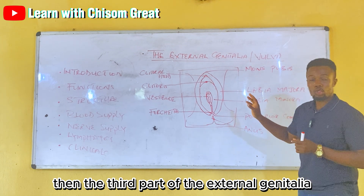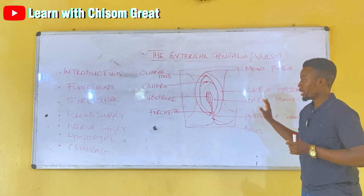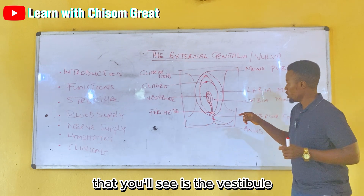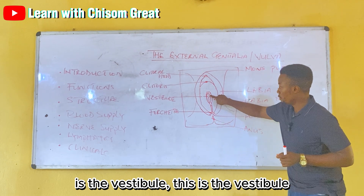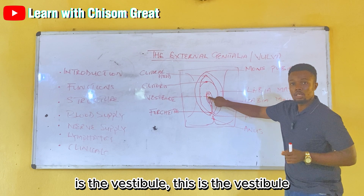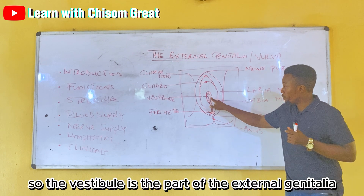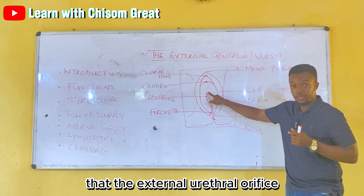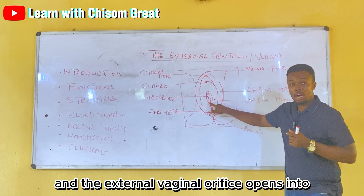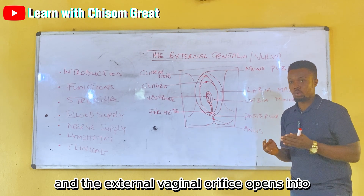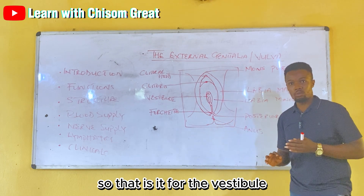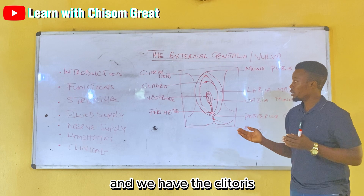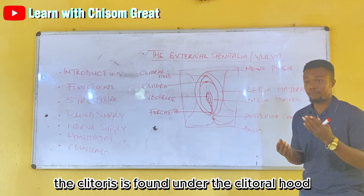The next structure is the vestibule. The vestibule is the part of the external genitalia into which the external urethral orifice and the external vaginal orifice open.